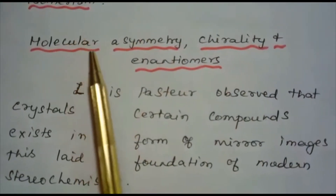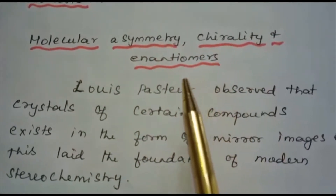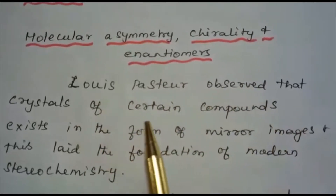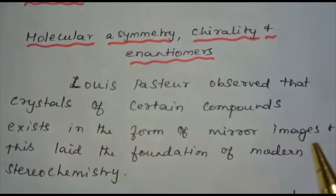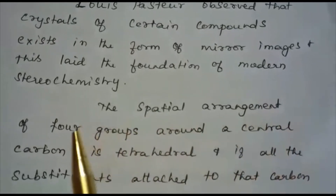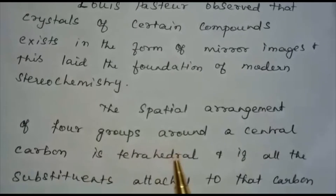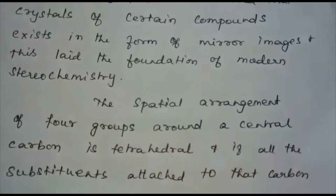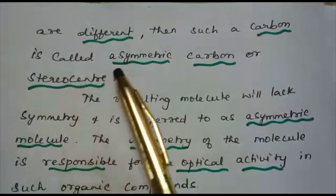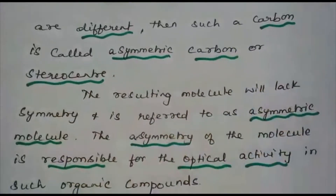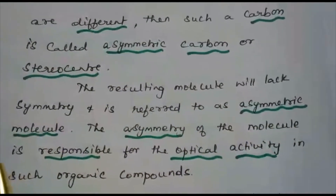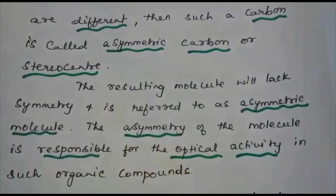Next, let us discuss molecular asymmetry, chirality, and enantiomers. Louis Pasteur was the first person who observed that crystals of certain compounds exist in the form of mirror images, and this laid the foundation of modern stereochemistry. The spatial arrangement of four groups around a central carbon is tetrahedral, and if all the substituents attached to that carbon are different, then such a carbon is called an asymmetric carbon or stereocenter. The resulting molecule will lack symmetry and is referred to as an asymmetric molecule, which is responsible for optical activity.